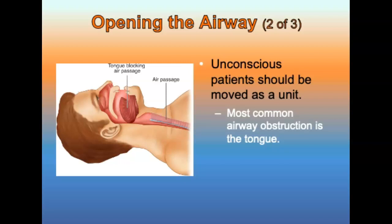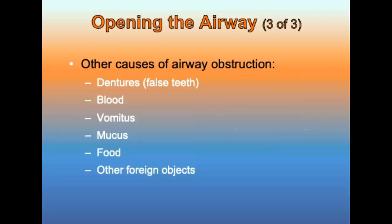In an unconscious patient, the most common airway obstruction is the patient's tongue, which falls back into the throat when the muscles of the throat and tongue relax. Other causes of airway obstruction include dentures, blood, vomitus, mucus, food, and other foreign airway objects.